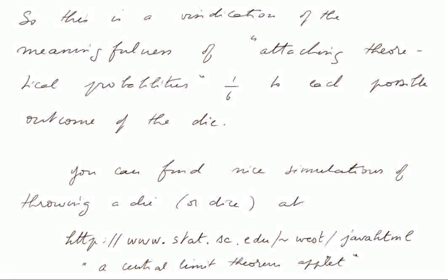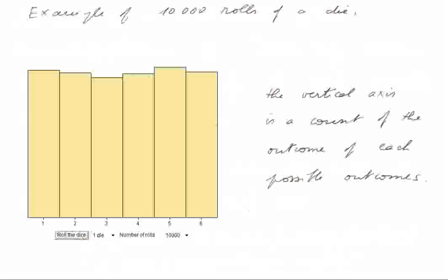Here is an example of what we can produce with it. We can roll a die 10,000 times and plot the frequencies of each outcome — one, two, three, four, five, and six. The vertical axis is a count of each of these outcomes. As you can see, we've done this experiment once, rolling a die 10,000 times, and we have roughly the same frequency of ones, twos, threes, up to sixes.